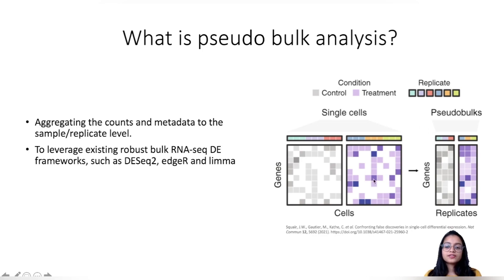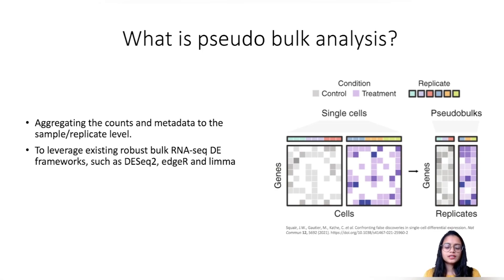Once we have that format, we can leverage existing RNA-seq differential expression frameworks like DESeq2, edgeR, and limma. The most obvious question at this point would be: why are we pseudo-bulking our data? We already have functions to perform differential expression analysis — like the findMarkers function used in a previous video to find canonical markers for each cluster, or to find genes differentially expressed due to treatment in a particular cell type.